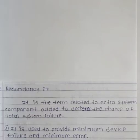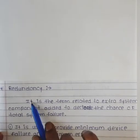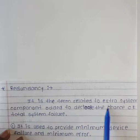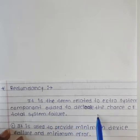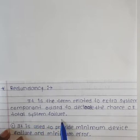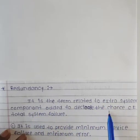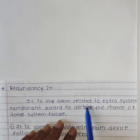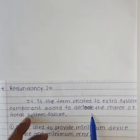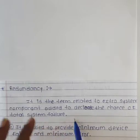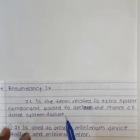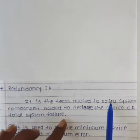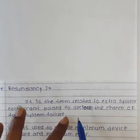Hello students, today we see the next topic that is redundancy. What is redundancy? It is the term related to extra system component added to decrease the chance of total system failure. Redundancy kya hai? Extra system component hai jo add hota hai aur decrease karta hai system failure chance ko. Jo bhi system mein failures hote hain, unka chance kam hota hai because of this redundancy, because of this extra system component added to the PLC.